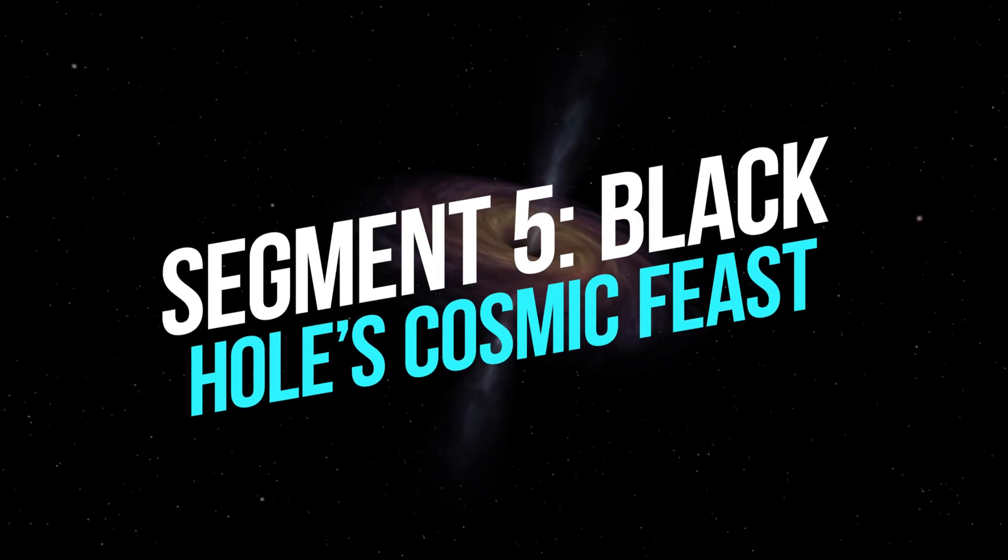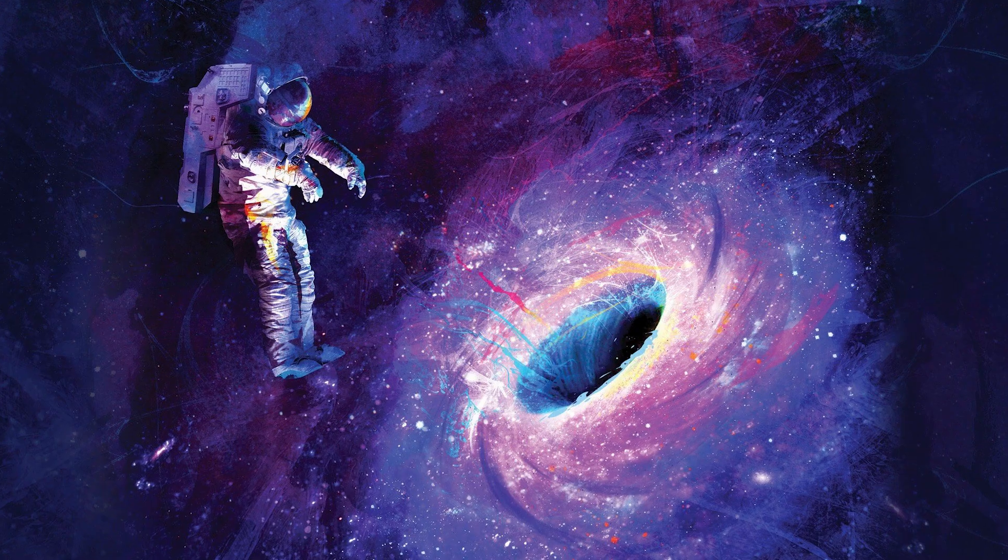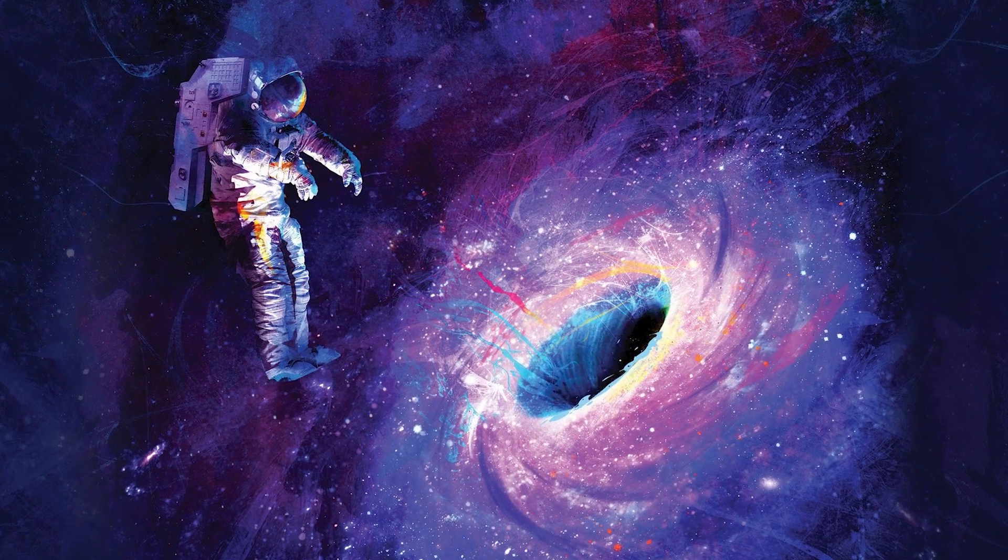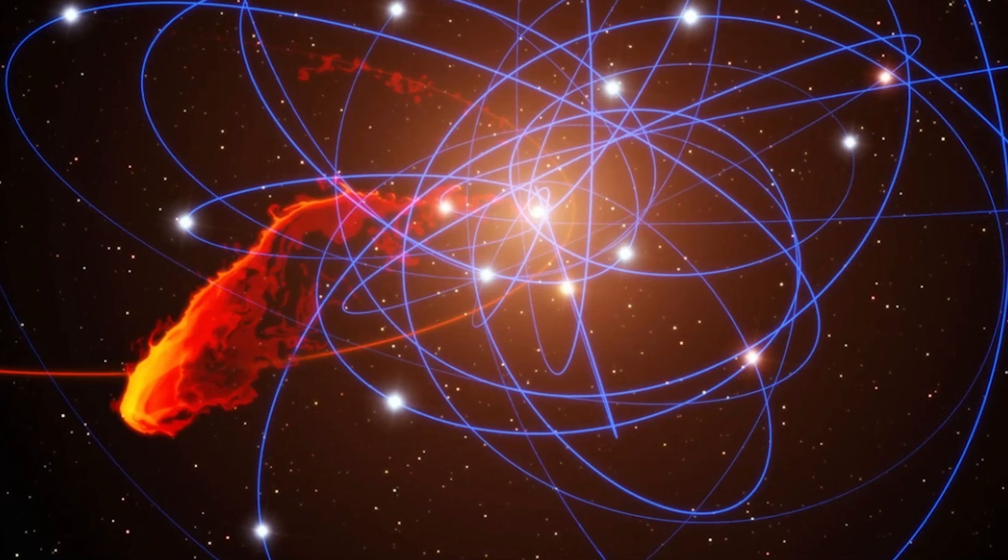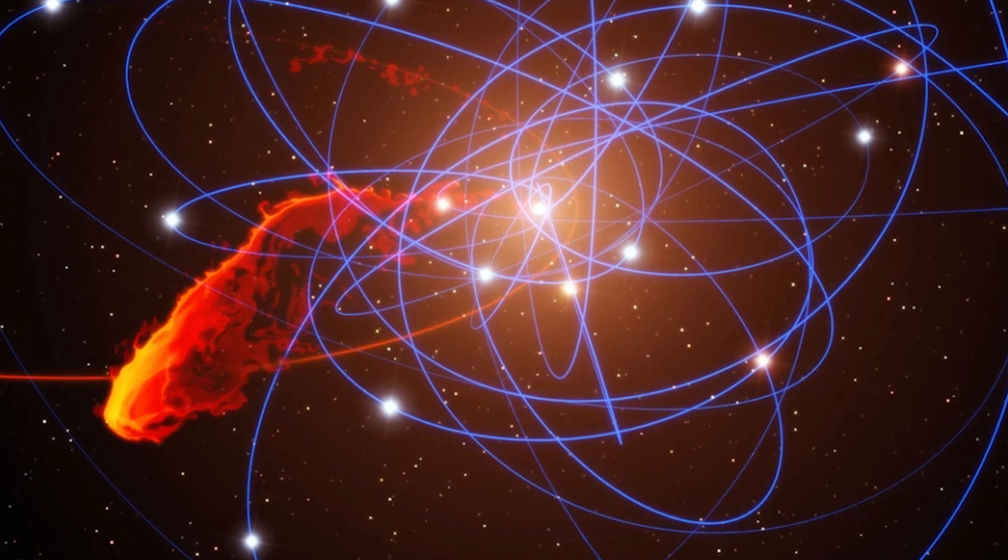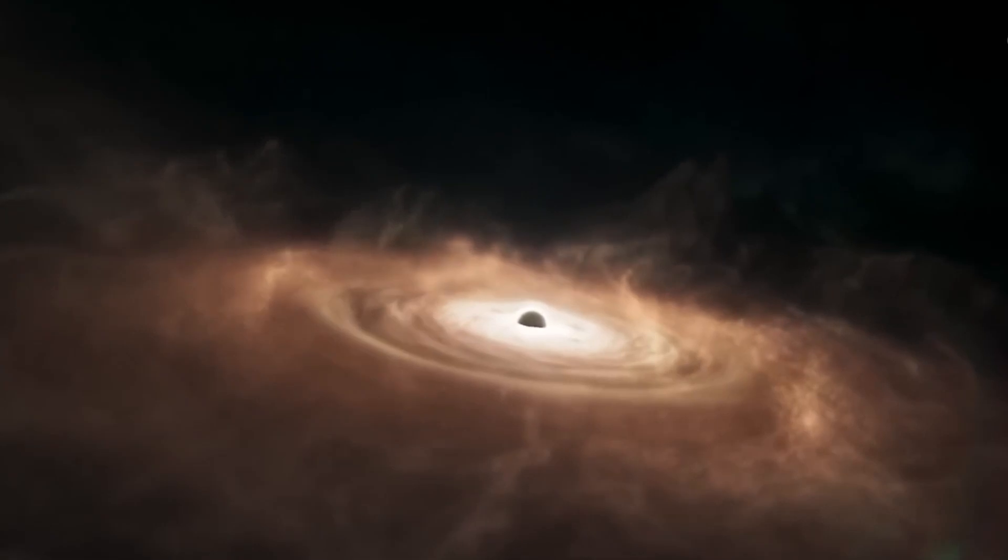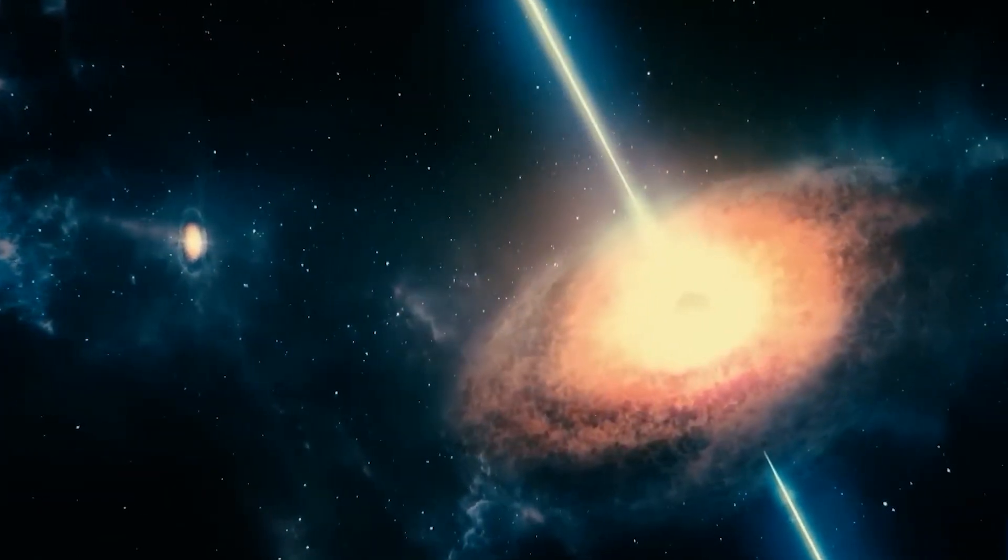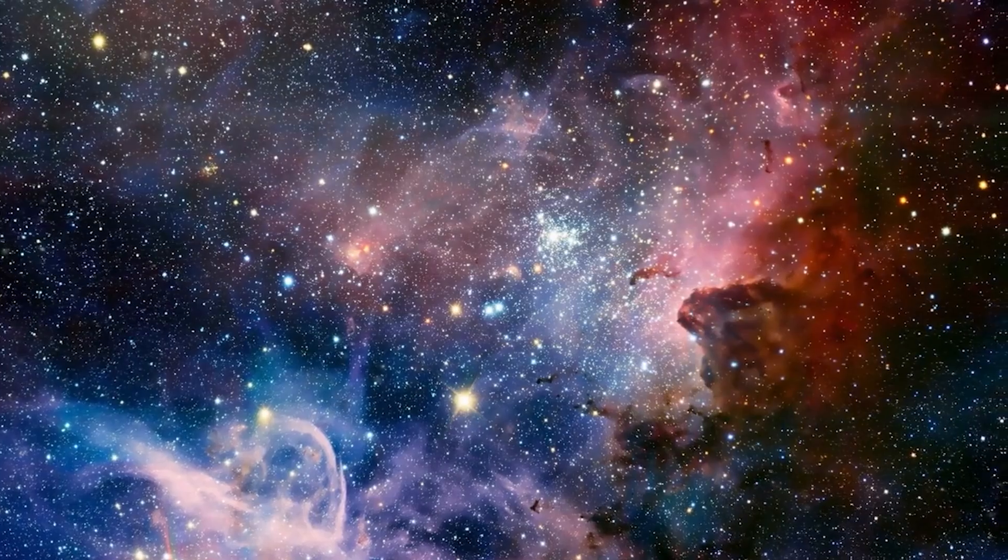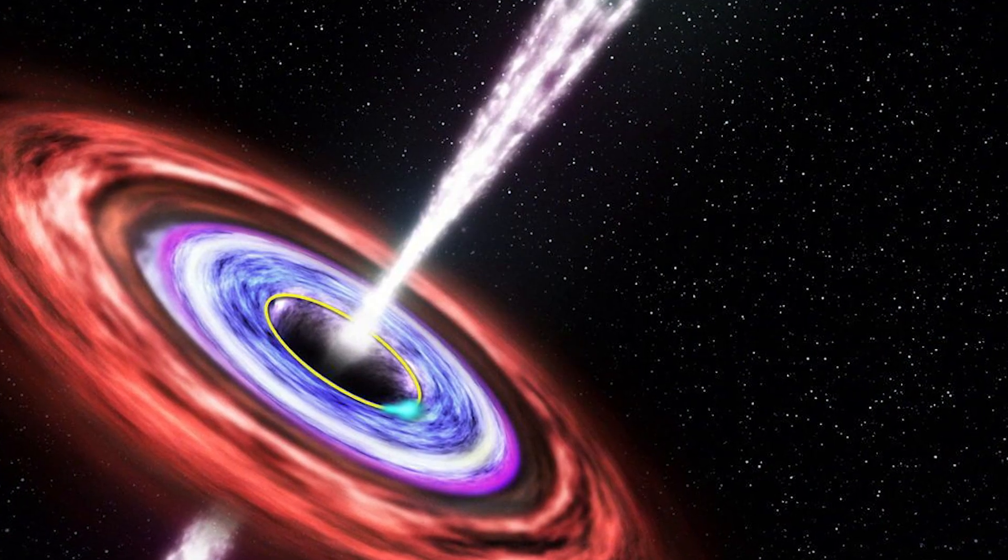Segment 5. Black Holes Cosmic Feast. What happens when objects come too close to a black hole? Their fate is sealed in a cosmic feast. As matter spirals around the event horizon, a superheated accretion disk forms, emitting intense radiation and creating powerful jets of particles shooting out into space.